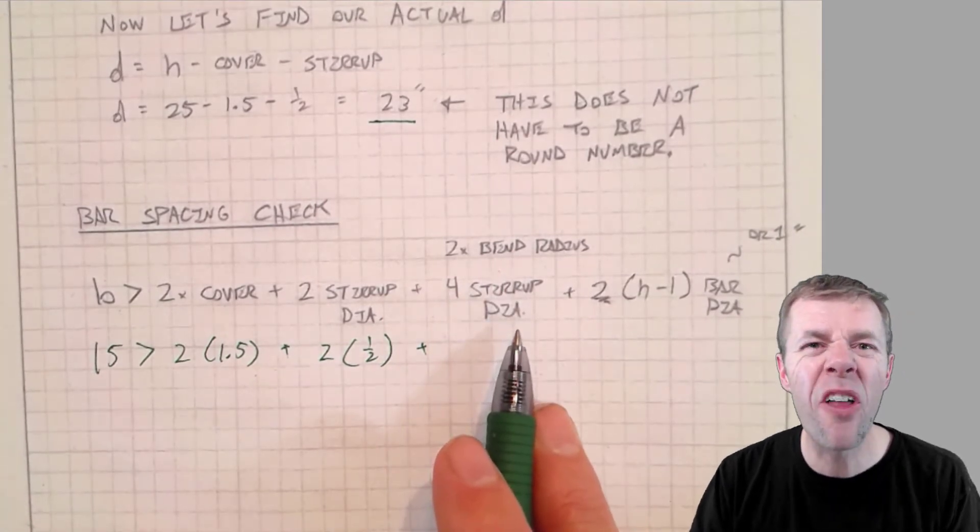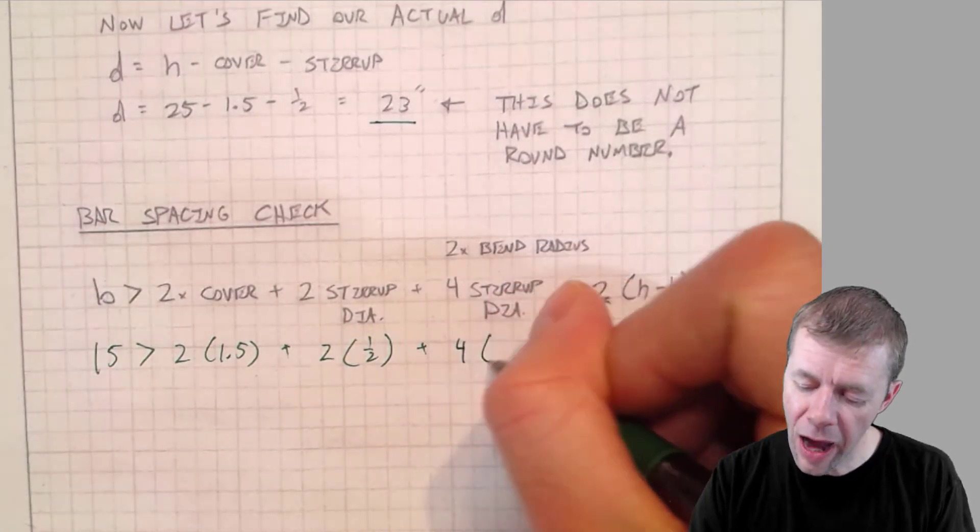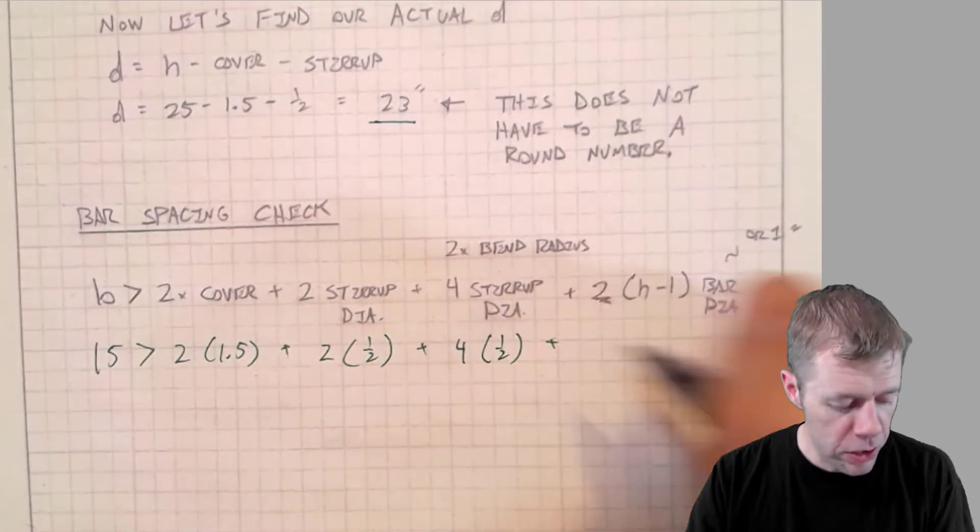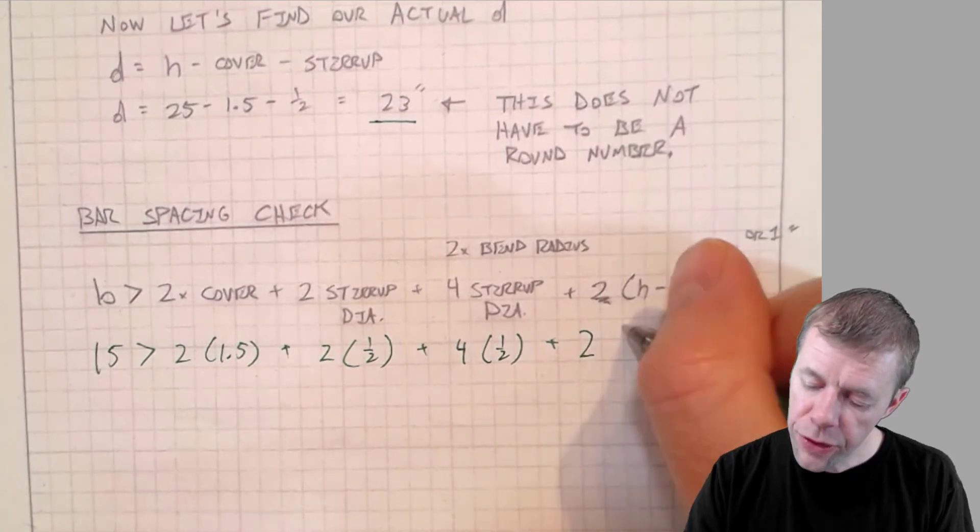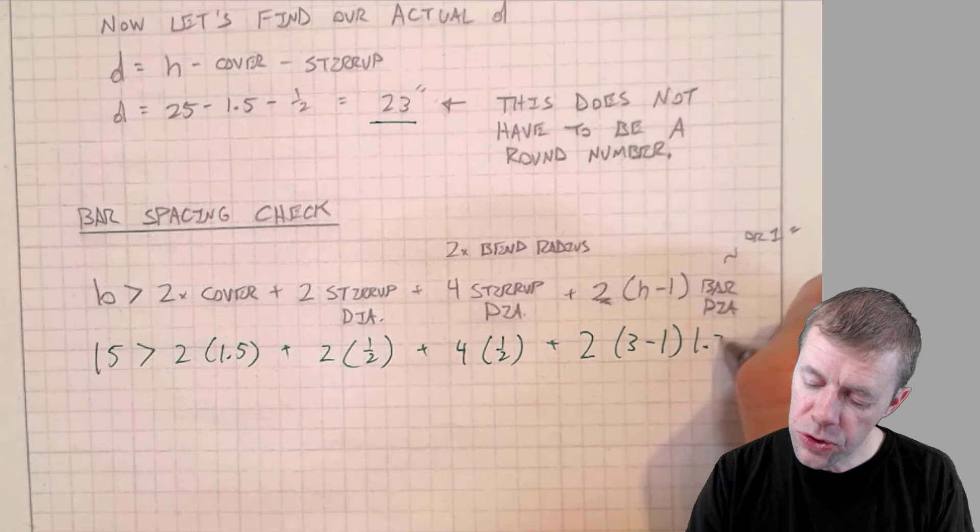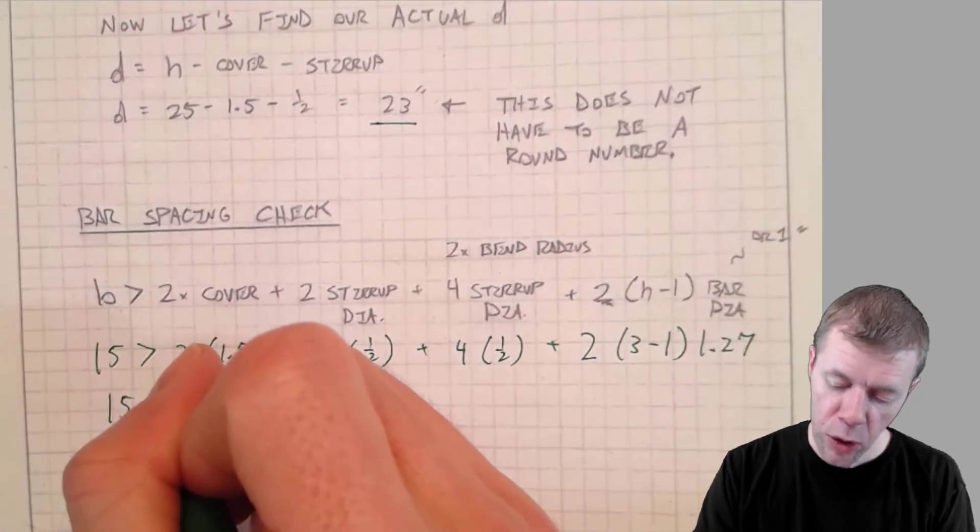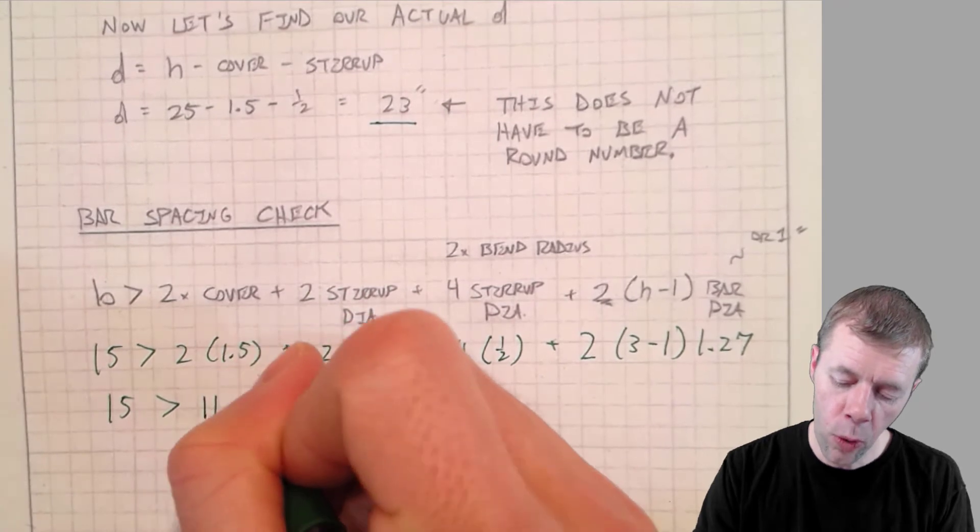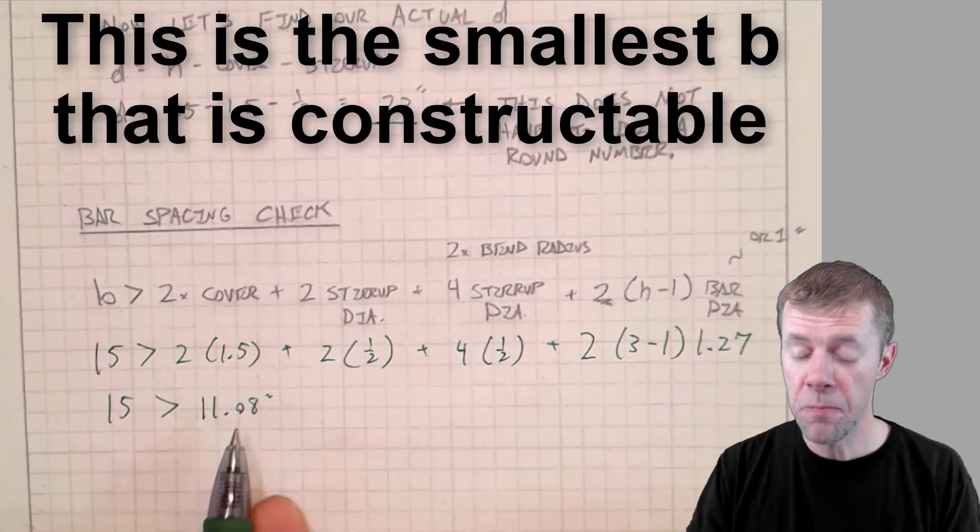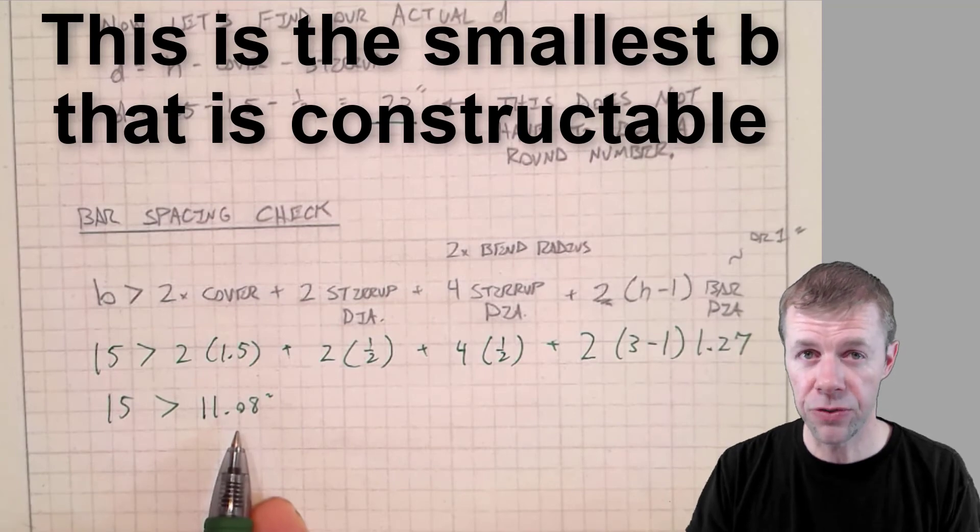You don't believe me? Watch my other video. That's four times a half, plus two times three minus one, times 1.27. That's equal to 15 inches, which is greater than 11.08 inches. And this is the minimum amount of spacing that I could use and still have a satisfactory beam.